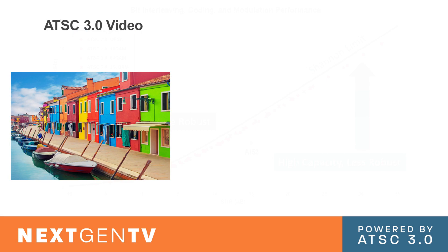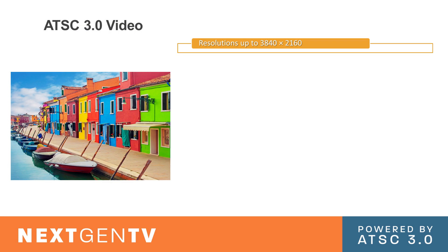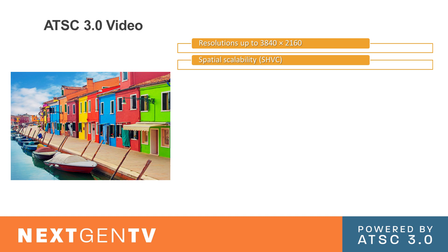Now we get into the video. We have resolutions up to 3840 by 2160 — basically 4K. The current system has 1080i and 720p, so this is a major advancement. We also have spatial scalability so that you can have an enhancement layer of 4K and a base layer of 2K. Using the Shannon limit curve, the most robust signal carries HD, and then you can send a less robust enhancement layer, so most everybody gets the HD picture, and people with rooftop antennas can also get the 4K picture.